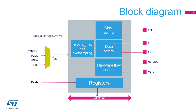TX and RX are used for data transmission and reception. NCTS and NRTS are used for RS-232 hardware flow control. The driver-enable, or DE, which is available on the same I/O as NRTS, is used in the RS-485 mode.